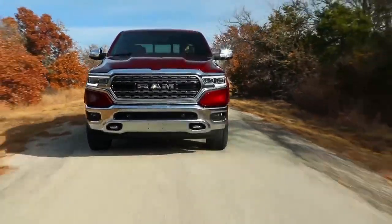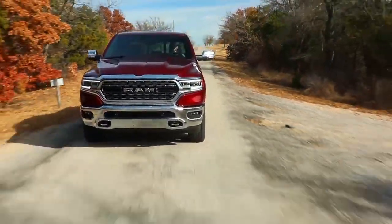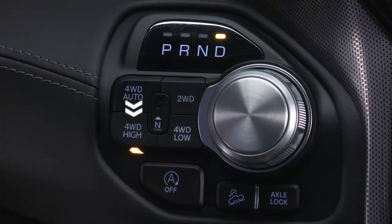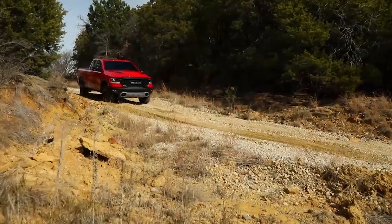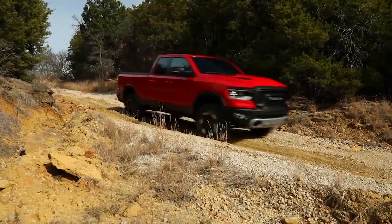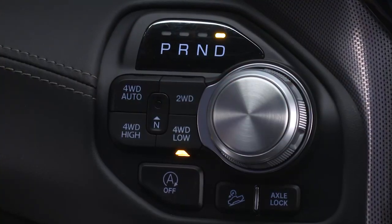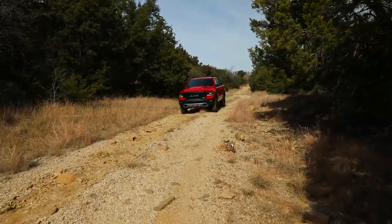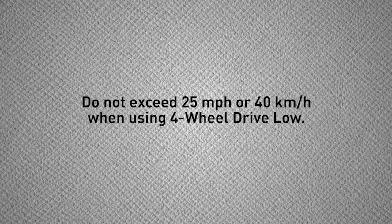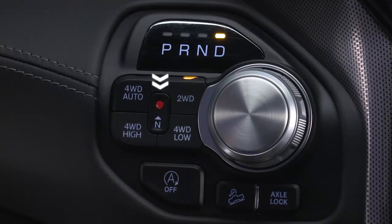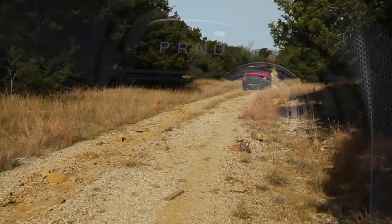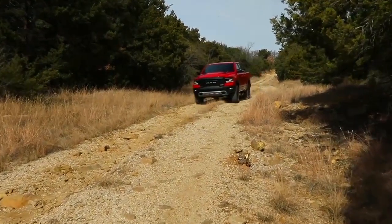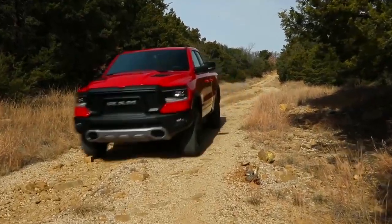For extra traction in varying road conditions, four-wheel drive high sends power to all four wheels for extra traction on loose, slippery surfaces. Four-wheel drive low provides added traction with maximum pulling power for loose, slippery surfaces at low speeds — do not exceed 25 miles per hour or 40 kilometers per hour. Neutral disengages the front and rear drive shafts; use it for flat towing behind another vehicle.